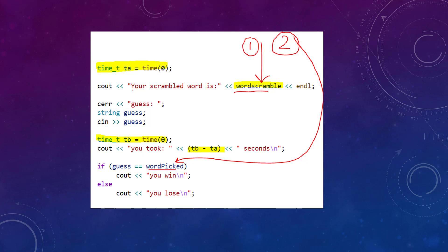Now we're entering high-pressure mode. We get here, grab the time, show the person the word, and say: go, what's your guess? They keep typing in guess after guess. Here's the word — quick, go. Done. How long did it take? TB minus TA. We print out the seconds, and then we tell them whether they won or lost and how much time it took.